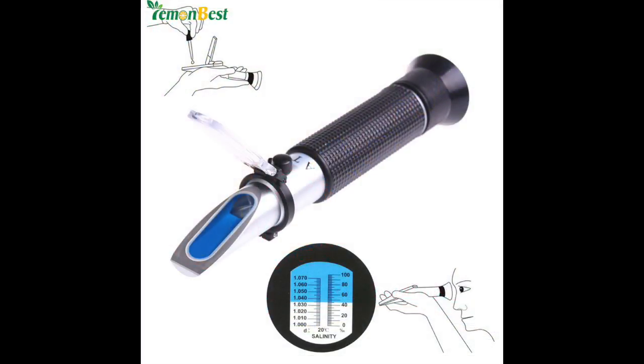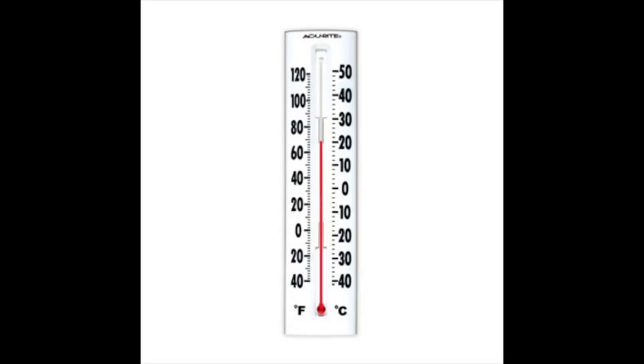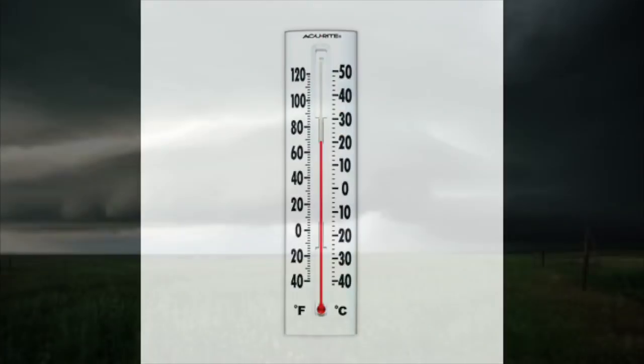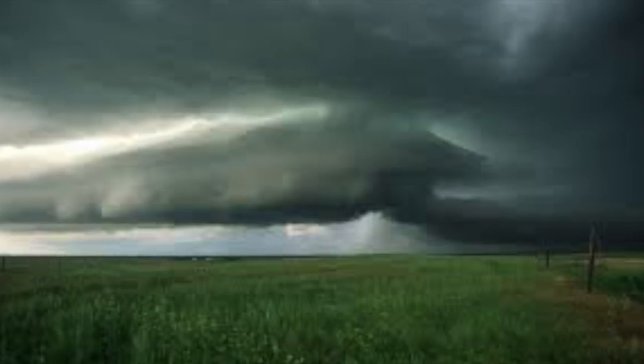It is also known as the ocean conveyor belt, because it mimics a conveyor belt by carrying warm and cold water around the different parts of our planet.